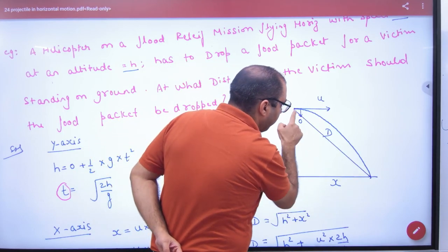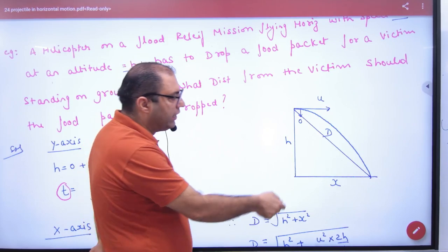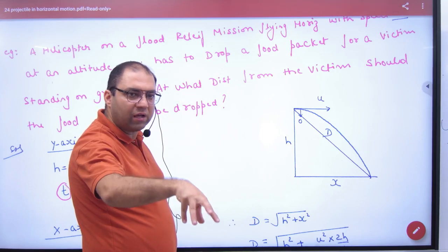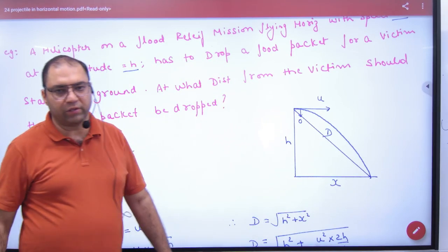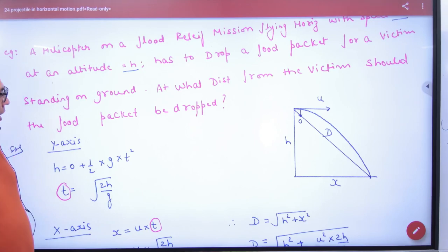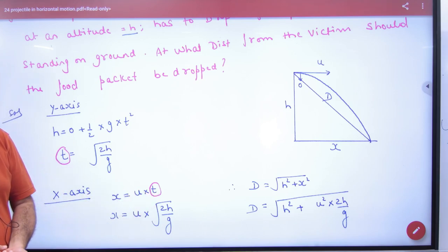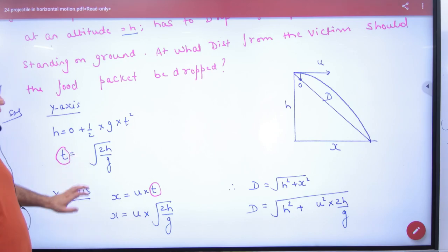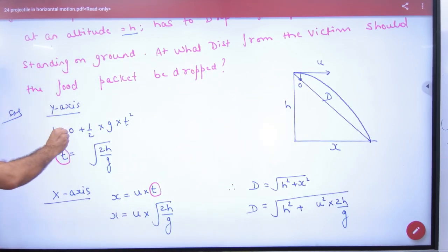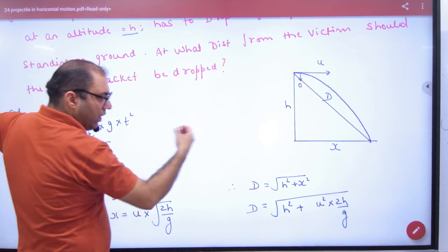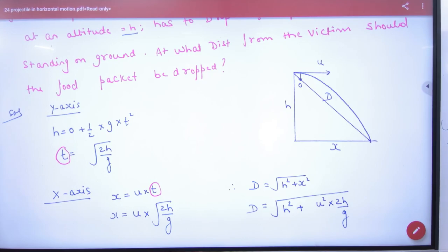To find X, first find time from the y-axis: H = ½gt², so t = √(2H/g). Then X = U × t = U√(2H/g). Substituting into D = √(H² + X²) gives the answer in variable form. Since H and U are given as variables, the answer remains in algebraic form — no numerical value is computed.